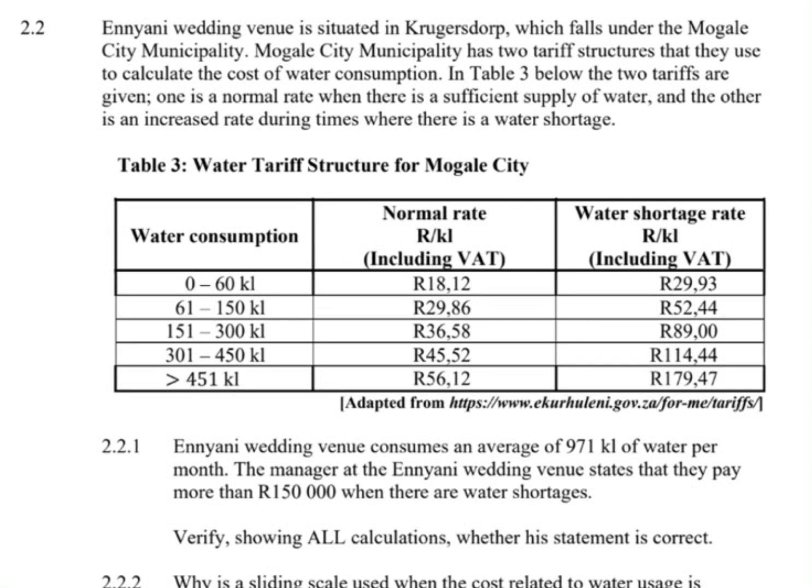The last block accommodates anything greater than 450. The normal rate, including VAT, is the column that we have in between there, that begins with 18.12 cents up to 56.12 cents. Then, water shortage rate starts at 29.93 and ends at 179.47 cents.